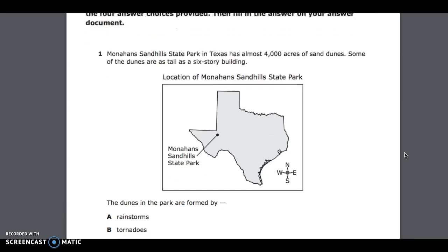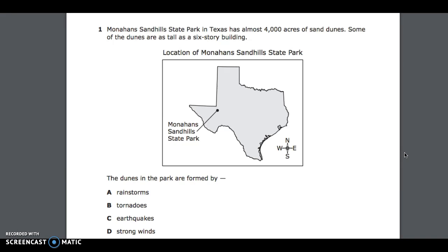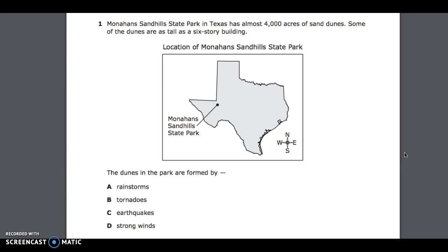Number 1. Monahans Sandhills State Park in Texas has almost 4,000 acres of sand dunes. Some of the dunes are as tall as a six-story building. Location of Monahans Sandhills State Park. The dunes in the park are formed by: A, rainstorms; B, tornadoes; C, earthquakes; D, strong winds.